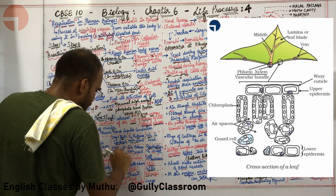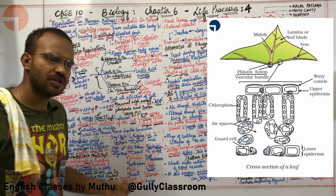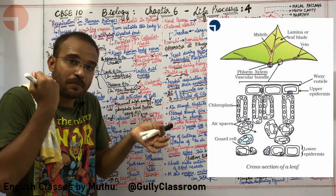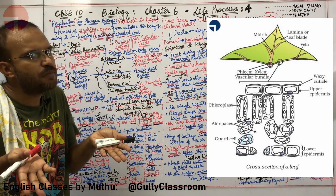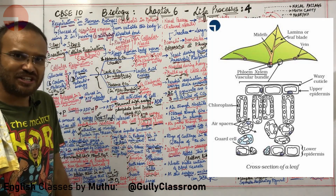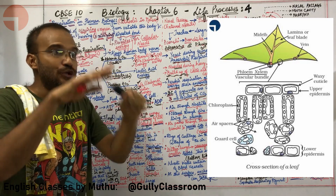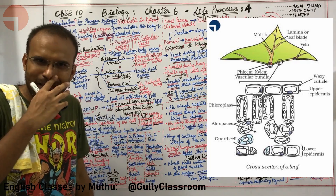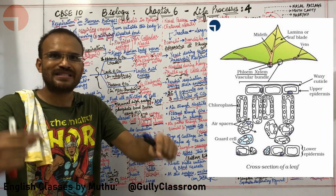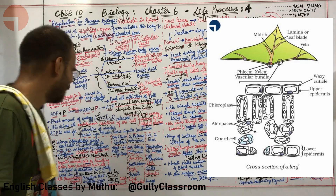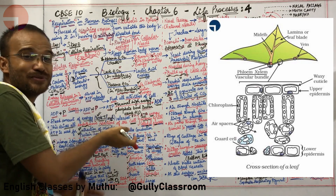During daytime, because photosynthesis constantly produces oxygen inside the leaf, the concentration of oxygen is higher inside than outside — so oxygen diffuses outward, and carbon dioxide (higher concentration outside) diffuses in. At night, photosynthesis stops and only respiration takes place: the plant takes in oxygen, burns food for energy, and releases carbon dioxide. This is why old people say don't sleep under a green tree at night — the tree takes oxygen and gives out carbon dioxide, which is not healthy for humans.